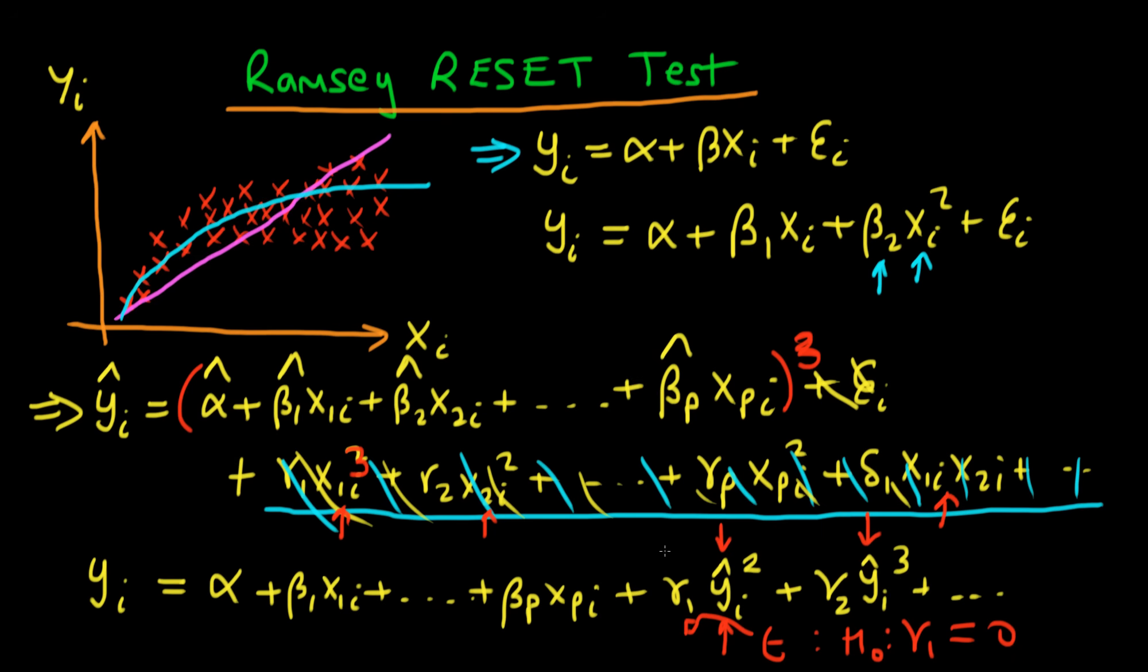And the idea with the Ramsey RESET test is that we would do an F-test on both of these coefficients. Because essentially we're not interested necessarily in what type of functional misspecification we have, but we're just interested to see whether we have functionally misspecified our model. So by doing an F-test on joint significance of this gamma one and this gamma two here, we're testing for general forms of functional misspecification.